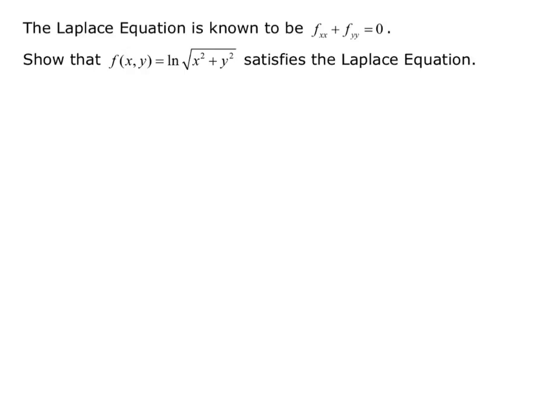The Laplace equation is known to be f sub xx plus f sub yy equals 0. In other words, the second derivative with respect to x plus the second derivative with respect to y equals 0. We are asked to show that the function f of xy equals the natural log of the square root of the quantity x squared plus y squared satisfies the Laplace equation.